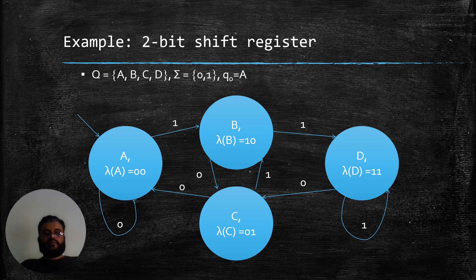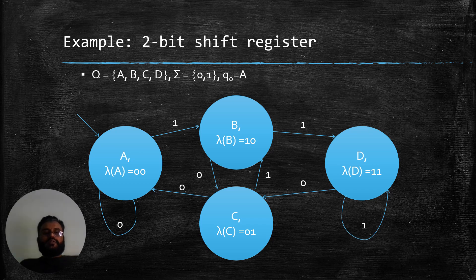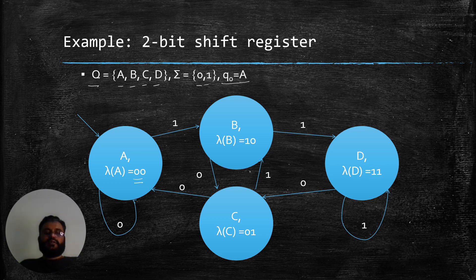Now I am going to model a very simple 2-bit shift register as per the formalism discussed on the previous slide. This 2-bit shift register has states A, B, C, and D in the set of states Q. It has 2 input symbols, 0 and 1, and state A is the initial state. Initially, both bits are 0 in state A. If I read a 1 from state A, which has output bit 00, the read bit is appended on the left and the rightmost bit is discarded, giving the output for the next state.